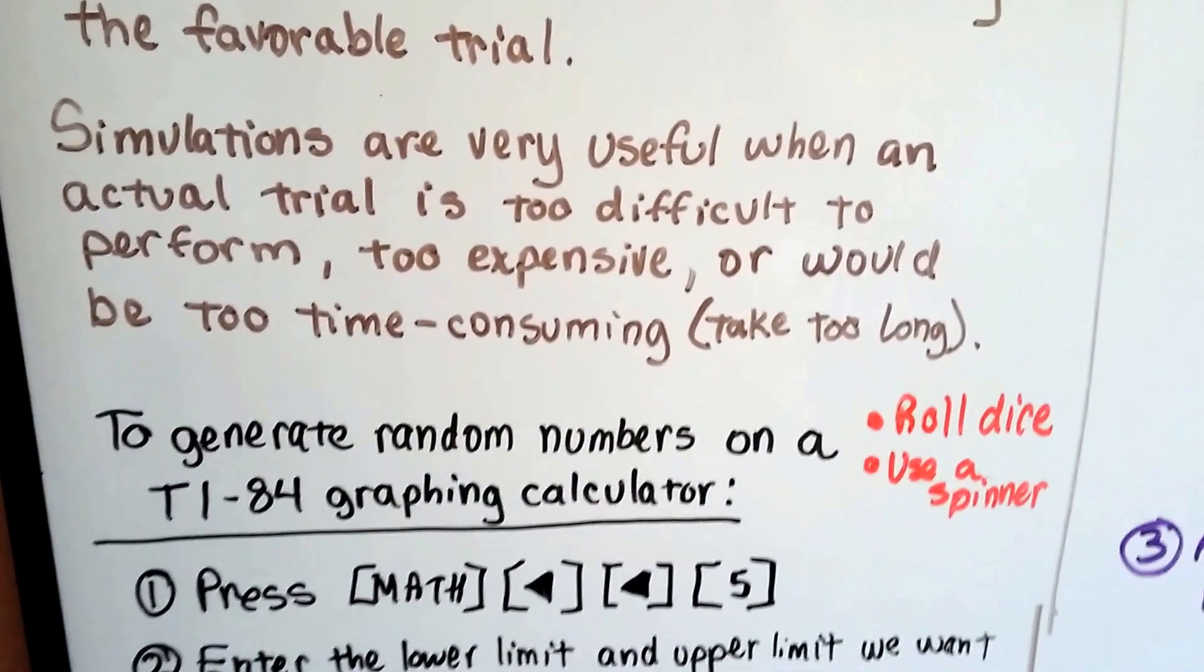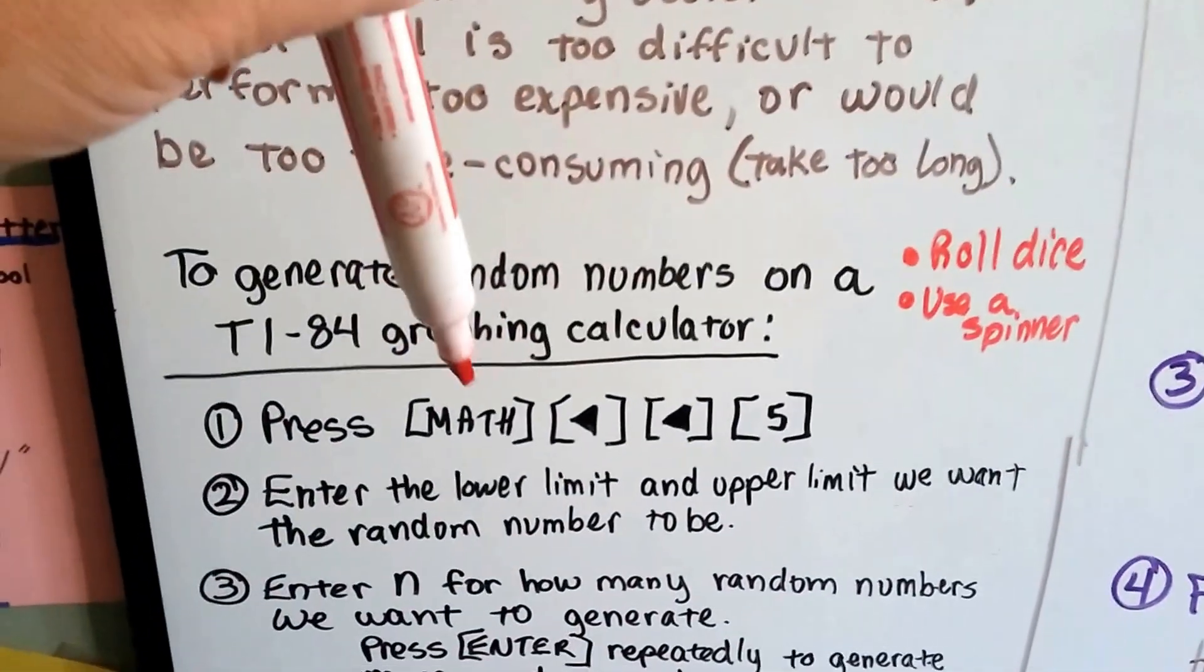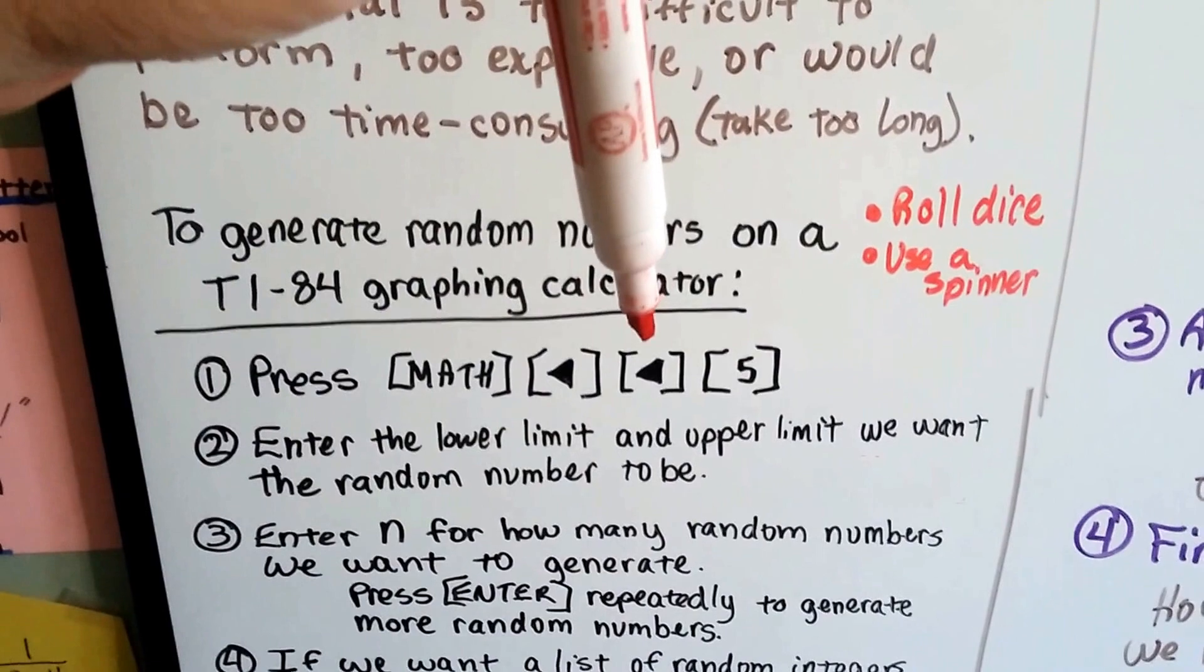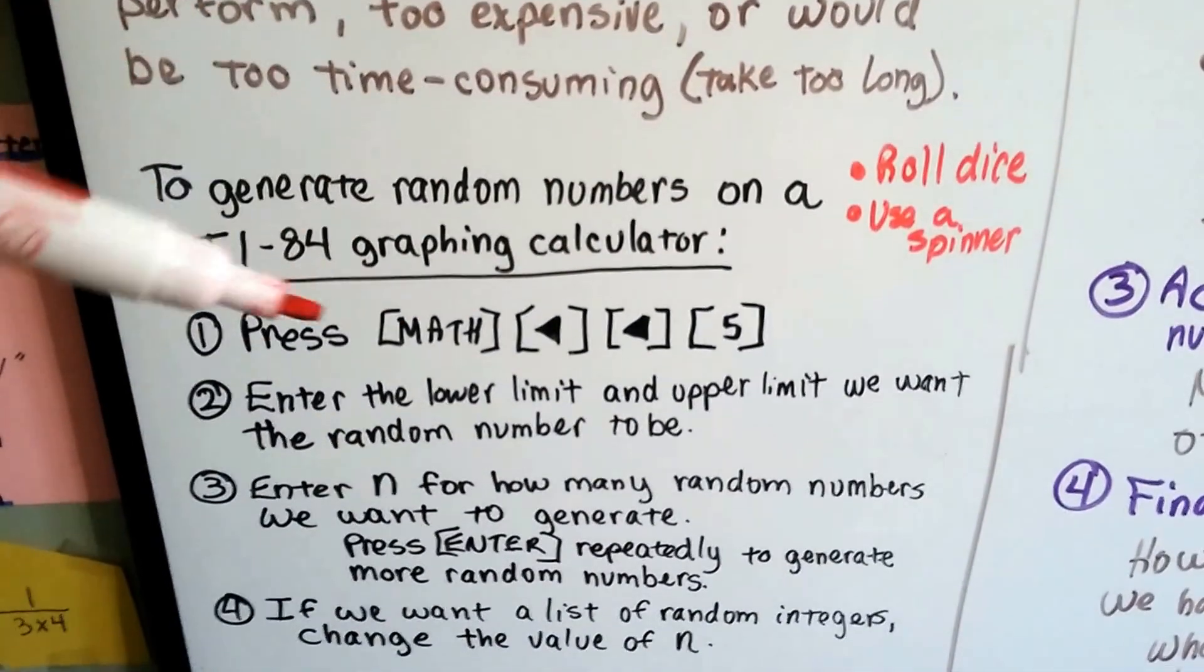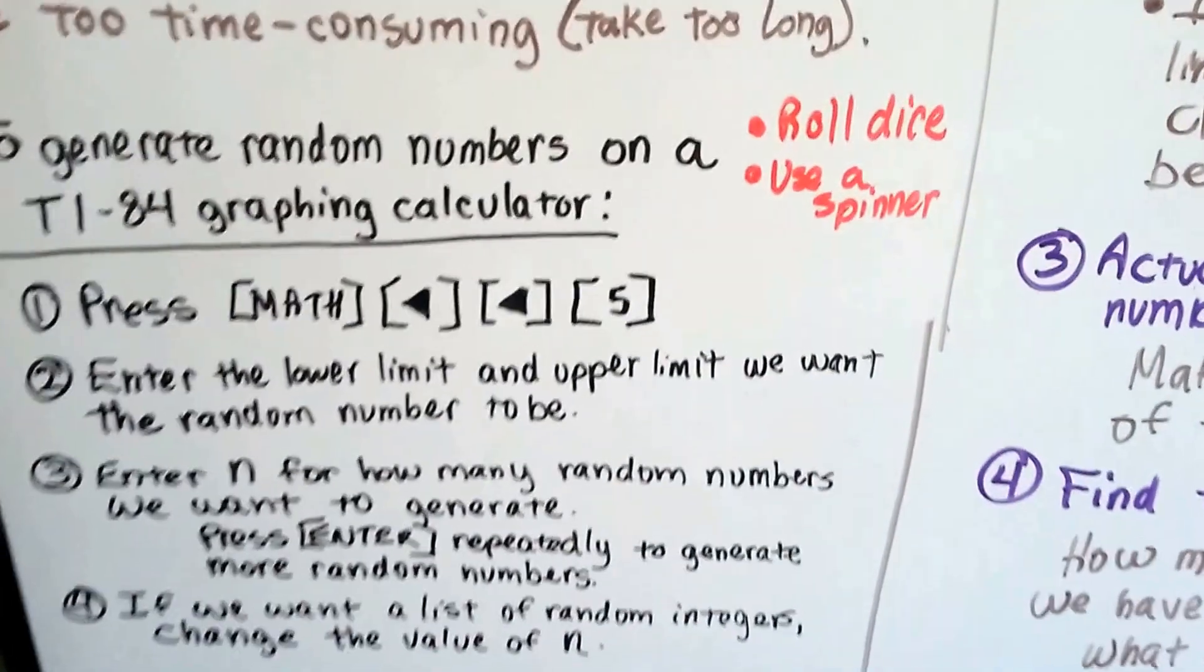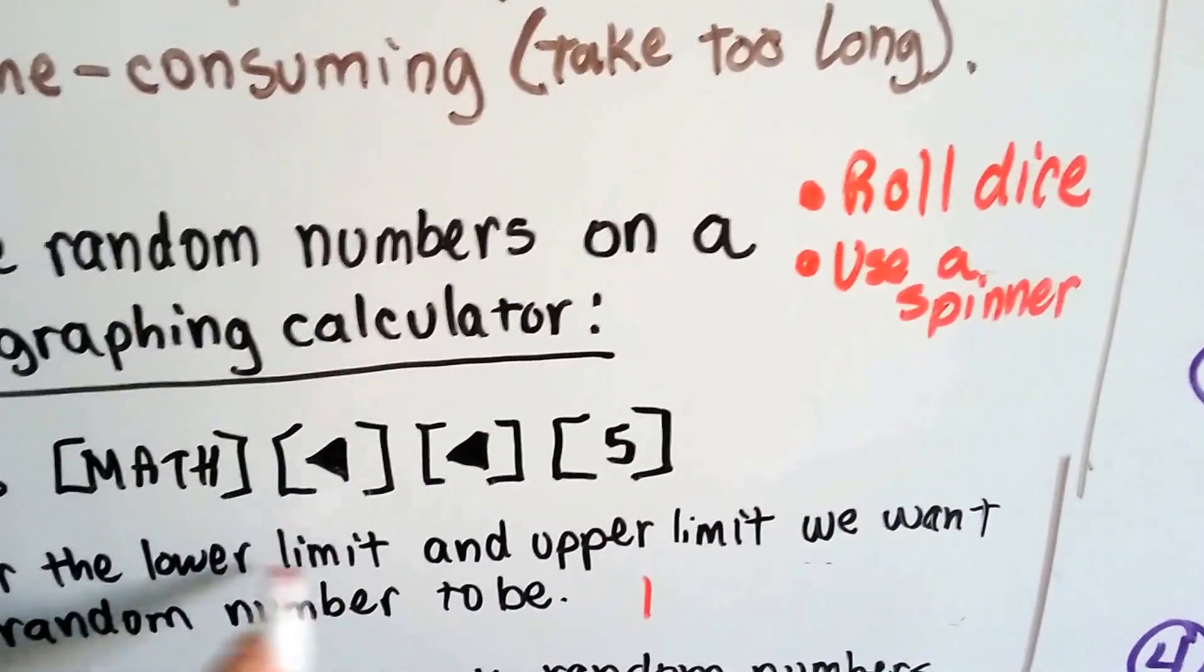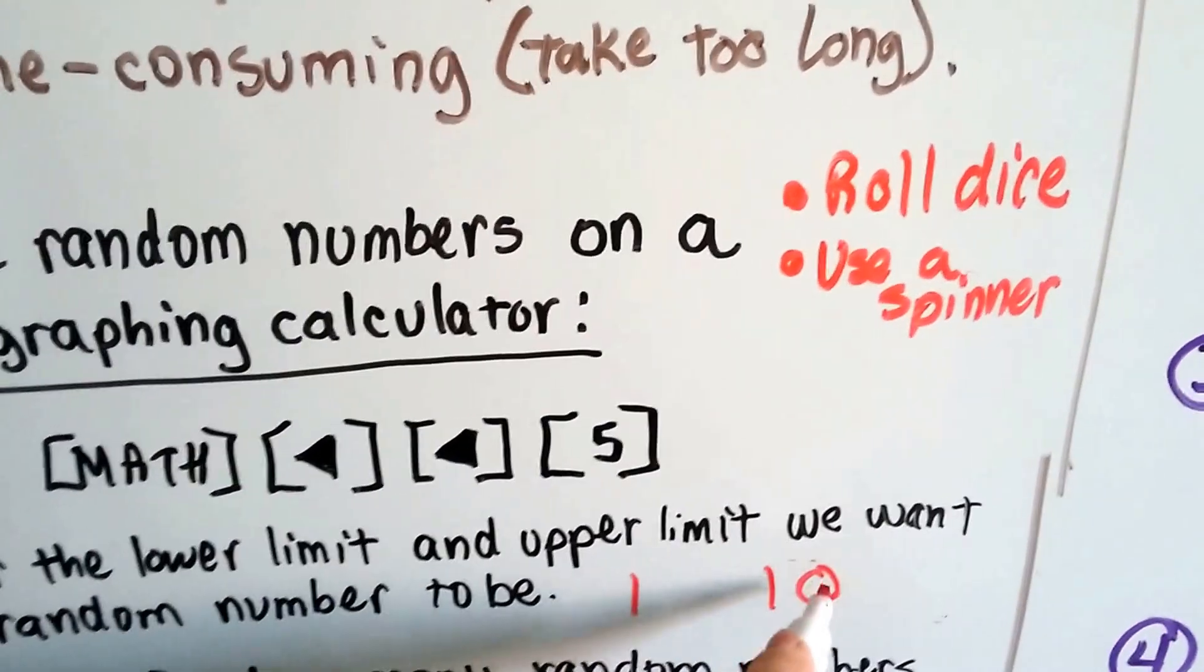To generate random numbers on a TI-84 graphing calculator, you need to press Math, then the left arrow, and the left arrow again, and then 5. You enter the lower limit and the upper limit of the random numbers. So let's say you want your random numbers to be 1 to 10. 1 would be your lower limit and 10 would be your upper limit.